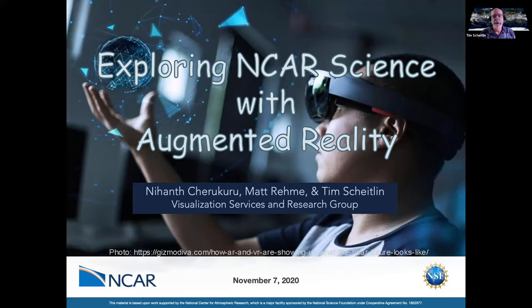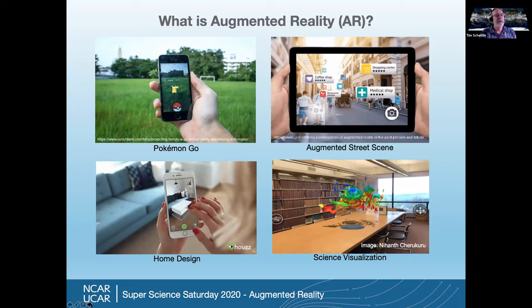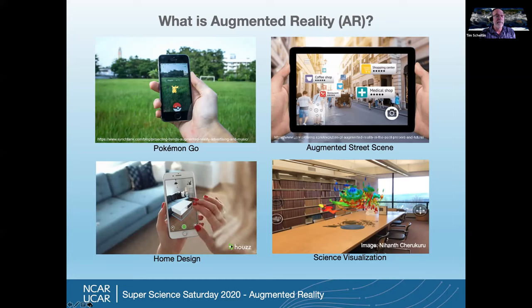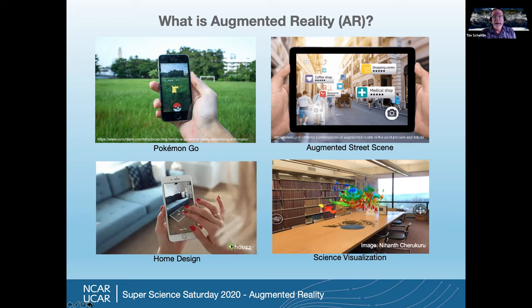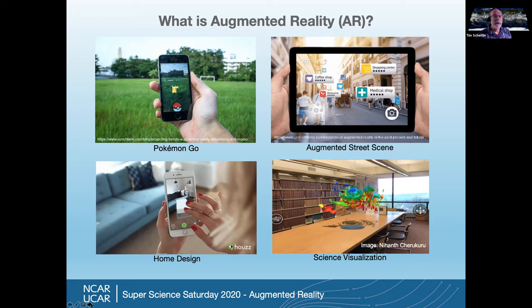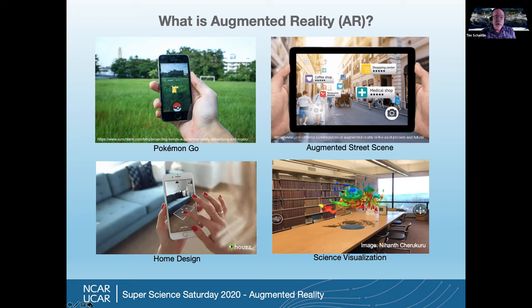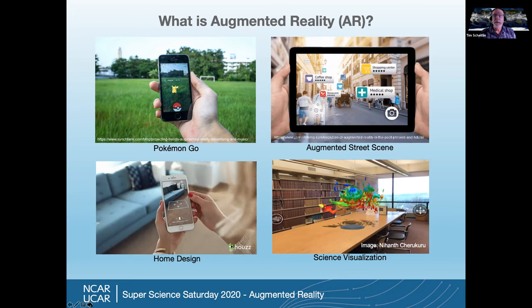One of the cool technologies we want to talk about today is called augmented reality. A really simple definition is that augmented reality is taking computer-generated content like images, objects, or labels and overlaying them on top of a real-world video to provide additional information or even for entertainment. Probably one of the most recognizable examples is a game called Pokemon Go. It became popular in 2016, and you use your mobile device to battle virtual creatures.